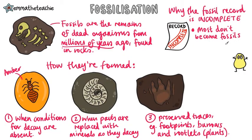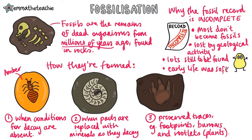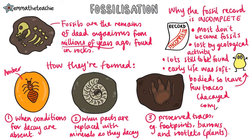Early fossils have been lost by geological activity. For example, when the crust moves and is pushed down into the mantle, the fossils get destroyed. We think there are lots of fossils still to be found. Finally, early forms of life were soft-bodied, which means they left few or no traces behind, as soft parts decay and cannot be replaced by minerals.